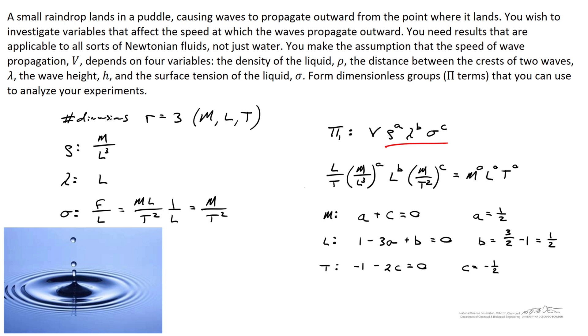So as we've done before, we'll write our repeating variables with the exponents a, b, and c. Writing out their dimensional equivalents, we come up with a system of three linear equations and three unknowns. Solving for this, we come up with values for a, b, and c.